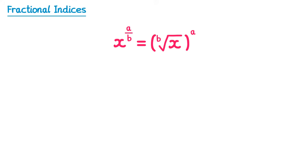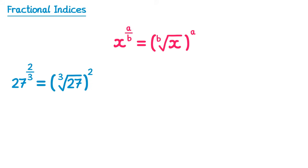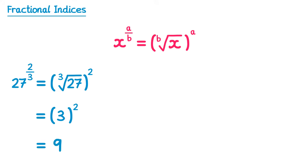Let's have a look at how we do this with some examples. We've got 27 to the power 2 thirds. On the bottom we've got a 3, so we start by doing the cube root of 27. Then we raise the result to the power 2, because there's a 2 on the top of the fraction. The cube root of 27 is 3, so we've got 3 squared, and 3 squared is 9. So the answer to 27 to the power 2 thirds is 9.